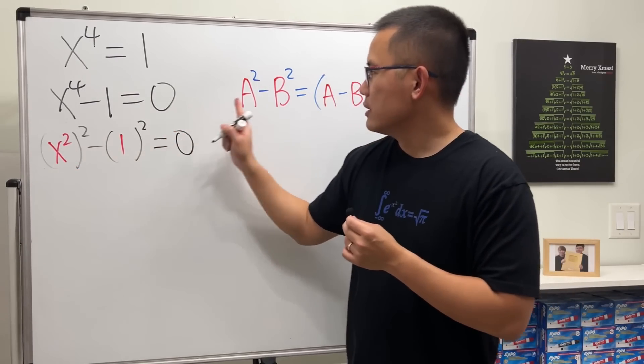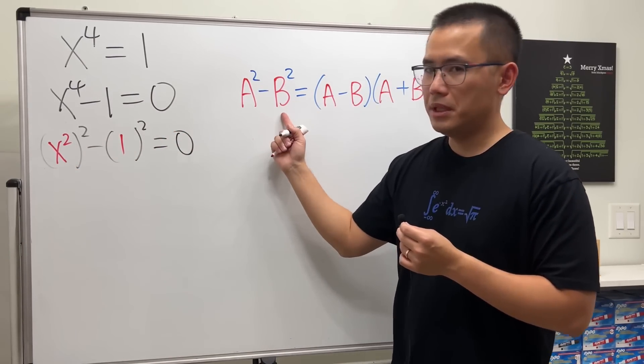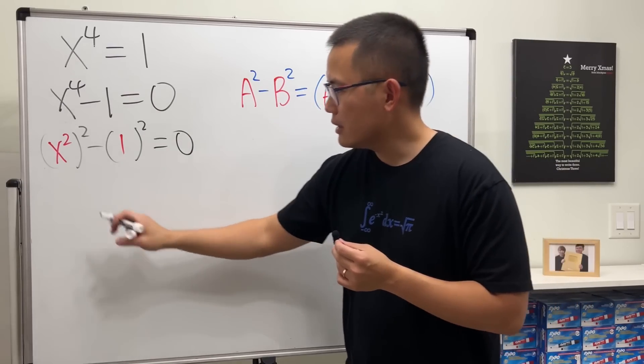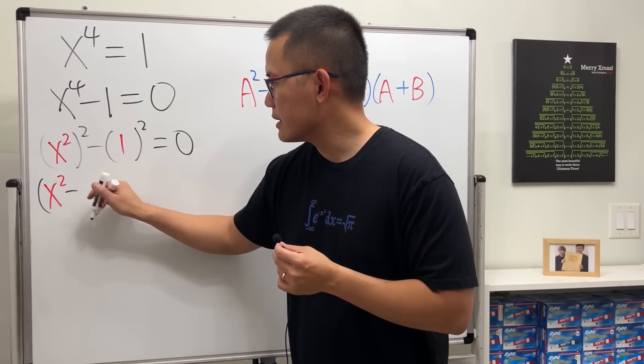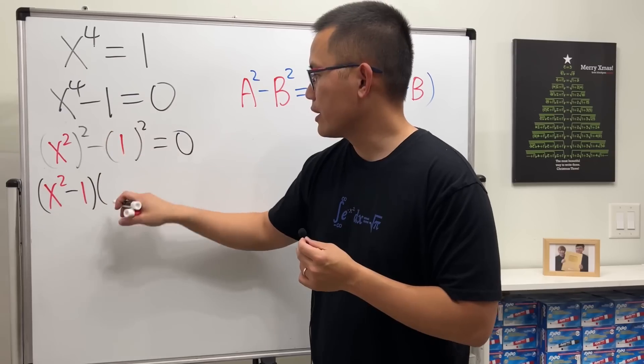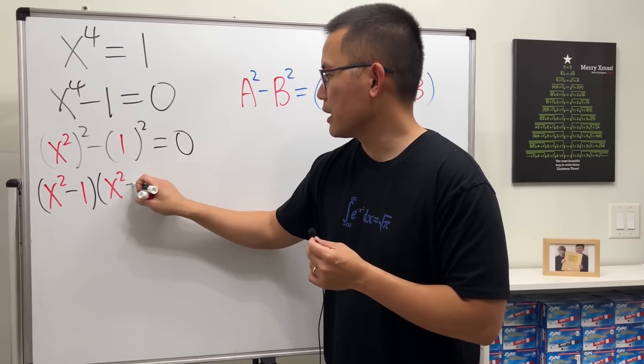So x squared is the a, 1 will be the b. Using the formula, we get x squared minus 1. And then we'll have x squared plus 1.